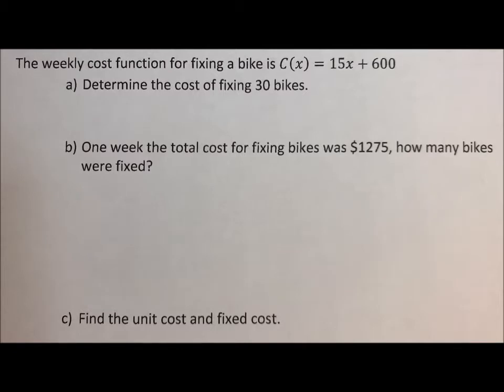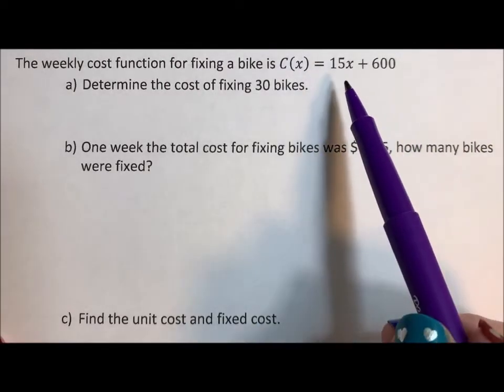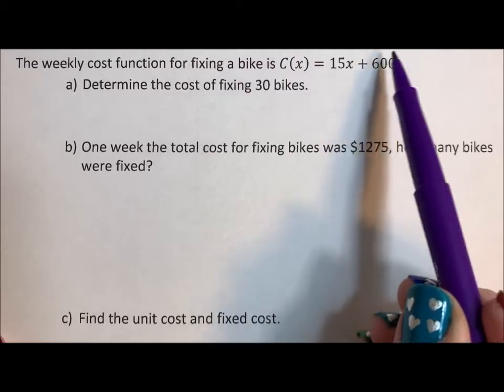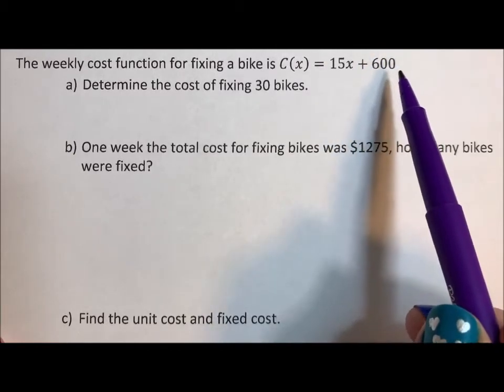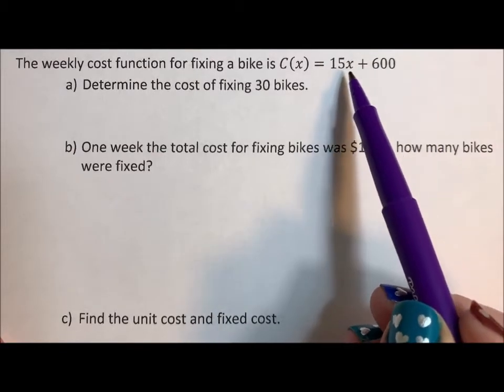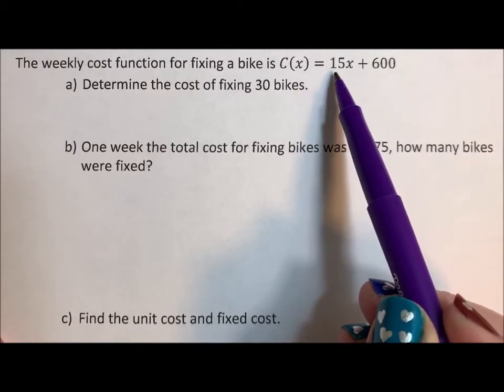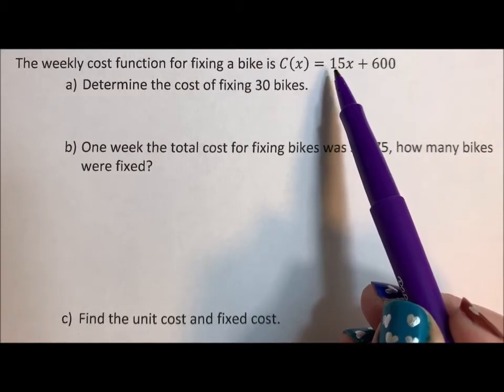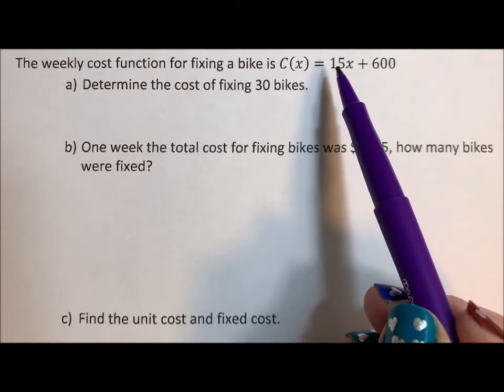The weekly cost function for fixing a bike is C(x) = 15x + 600. So what's happening here is the 600 is what it costs to run the shop - rent, utilities, whatever. This is what they have to pay no matter what, and the 15x is what their actual average cost per bike is.